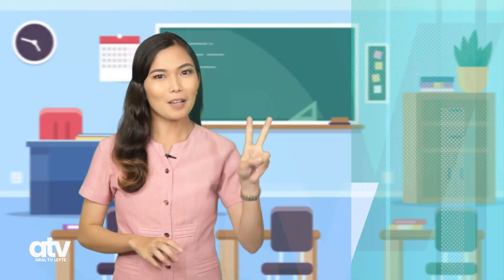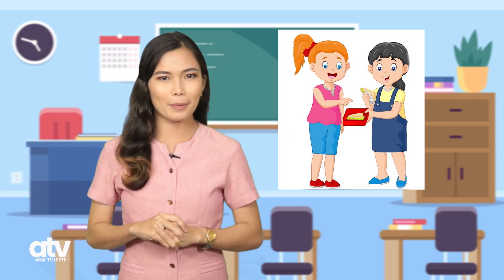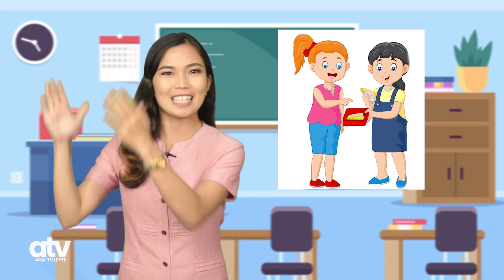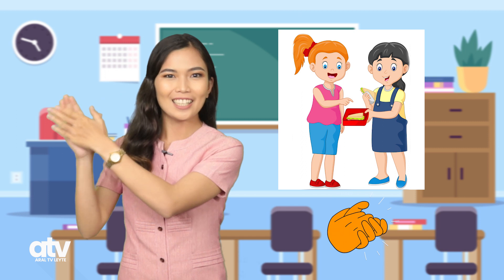Pumunta naman tayo sa pangalawang larawan. Ang pangalawang larawan naman ay nagpapakita ng isang bata na ibinibigay ang kalahati ng kanyang pagkain sa kanyang kamag-aral na walang baon. Sa tingin nyo, ito ba ay nagpapakita ng pagpapaubaya ng pansariling kapakanan para sa kabutihan ng kapwa? Tama! Magbigay tayo ng tatlong palakpak para sa batang ito. Isa, dalawa, tatlo.